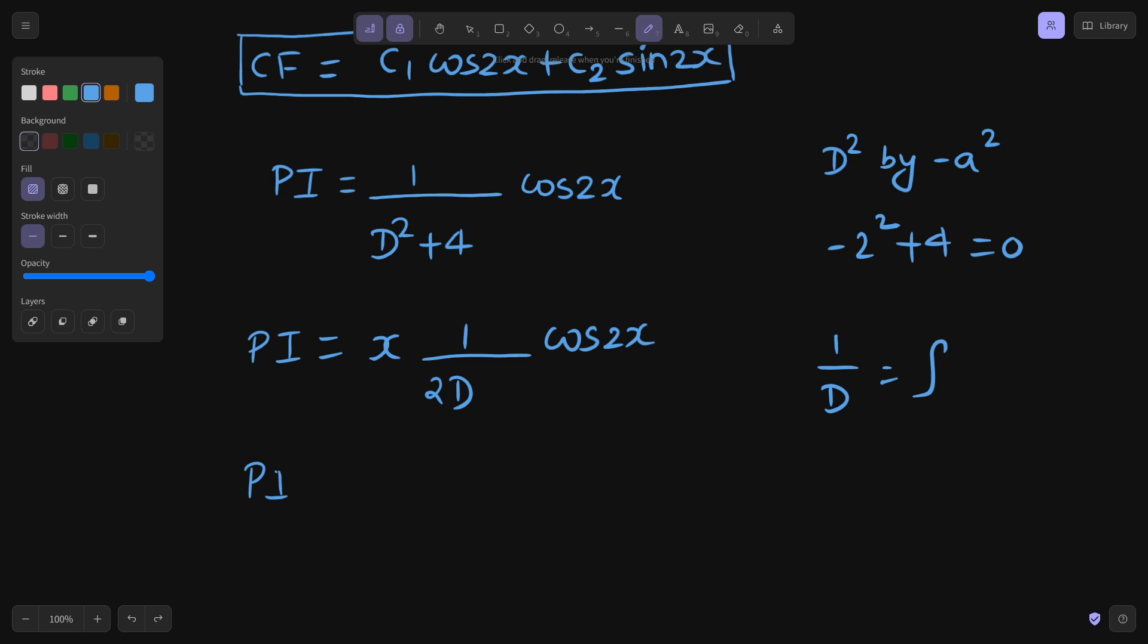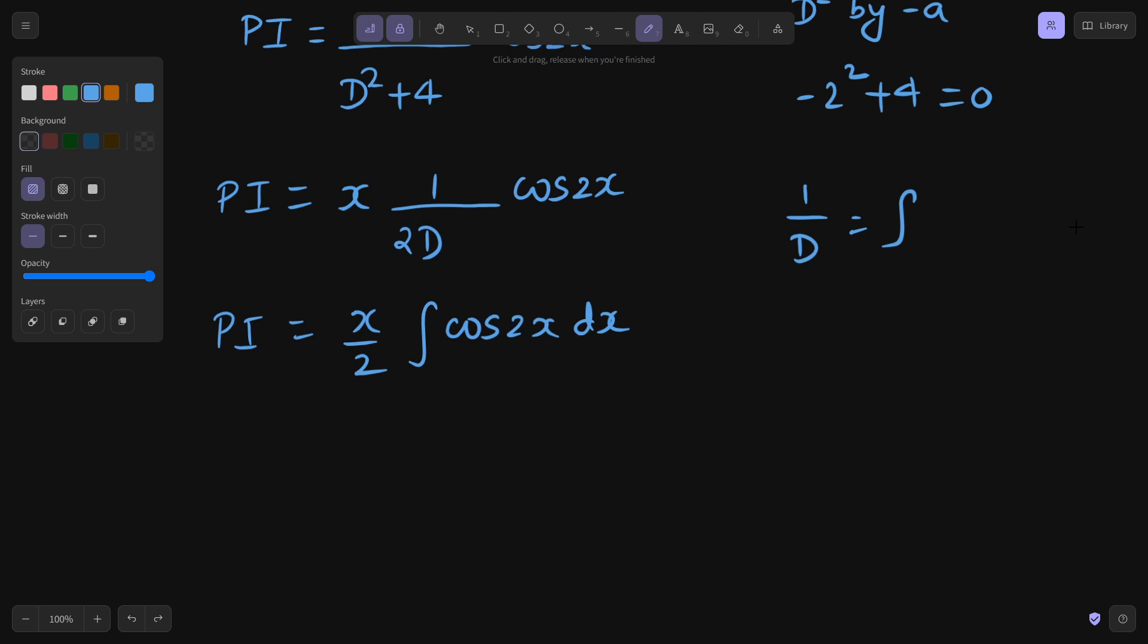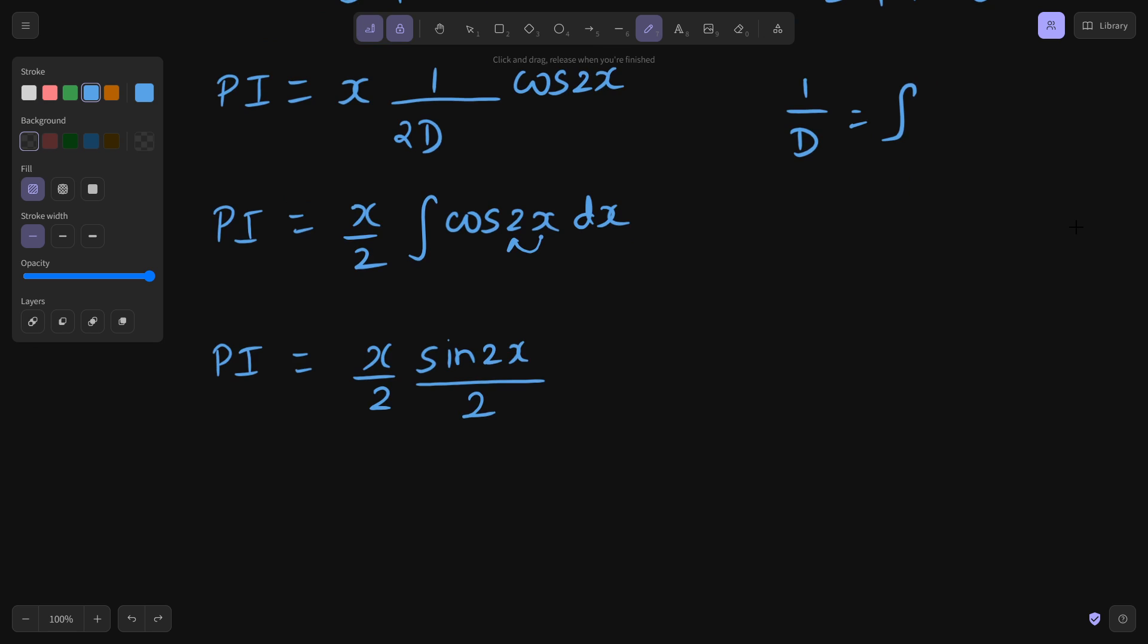Your particular integral will be x by 2. Integral, because everything is coming in terms of x. So integral with respect to x. So PI will be x by 2. Integral of cos is sine, and we will have to divide by extra 2 because we do not have cos x. We have cos 2x. Coefficient of x is 2.